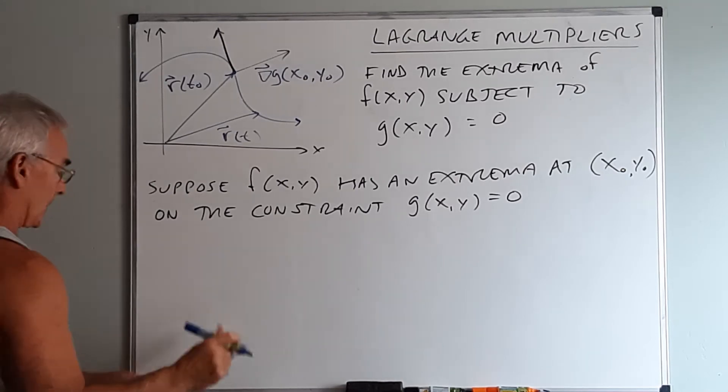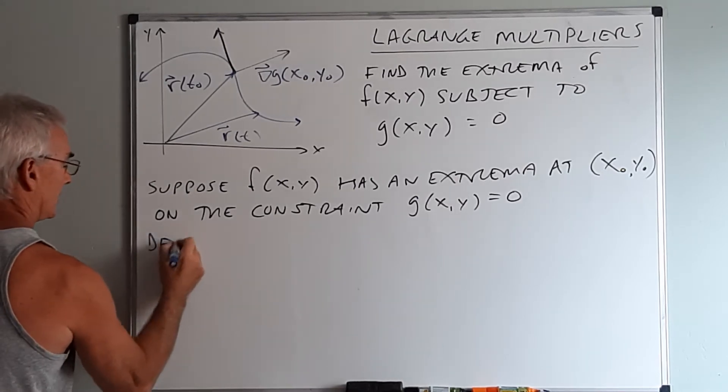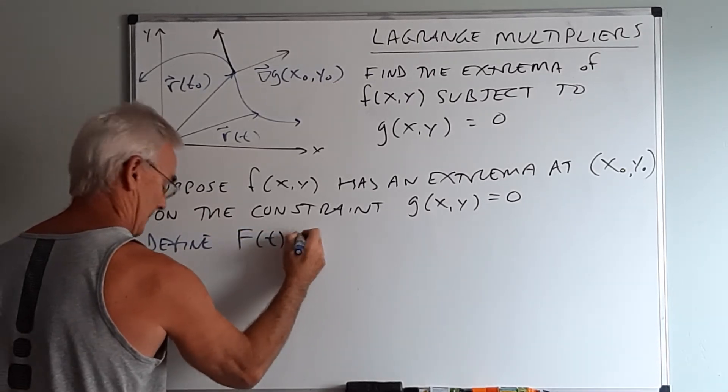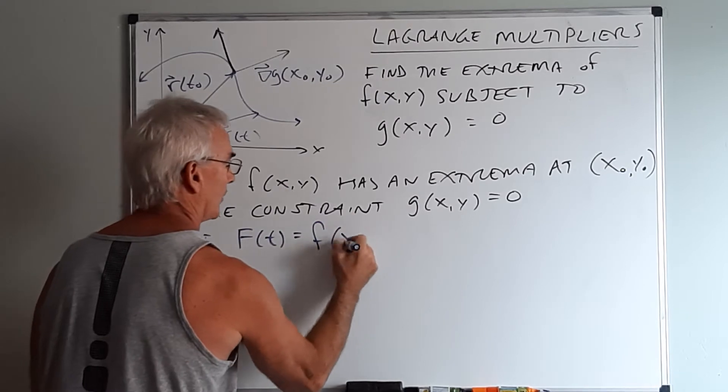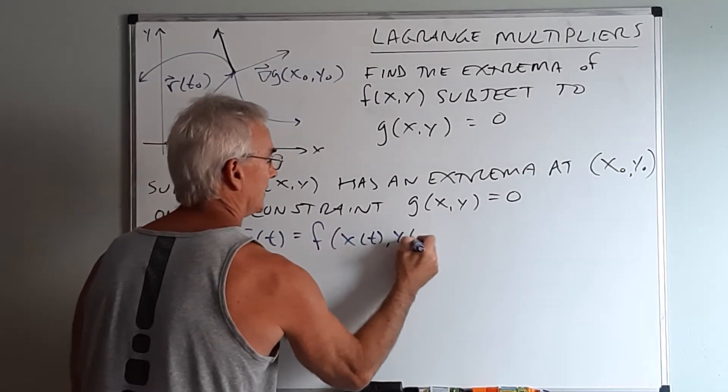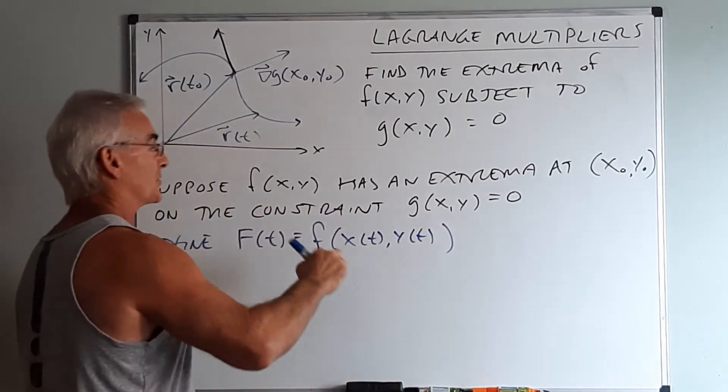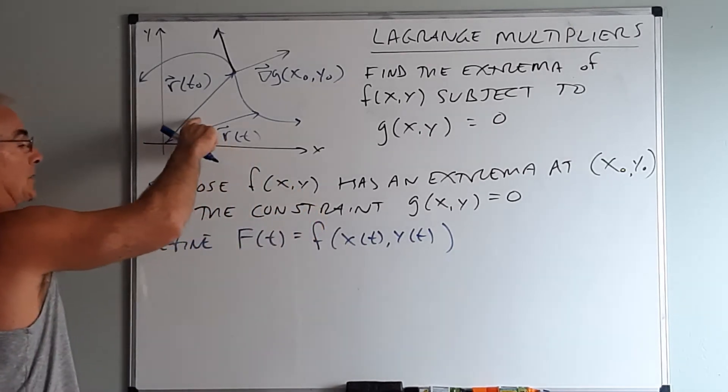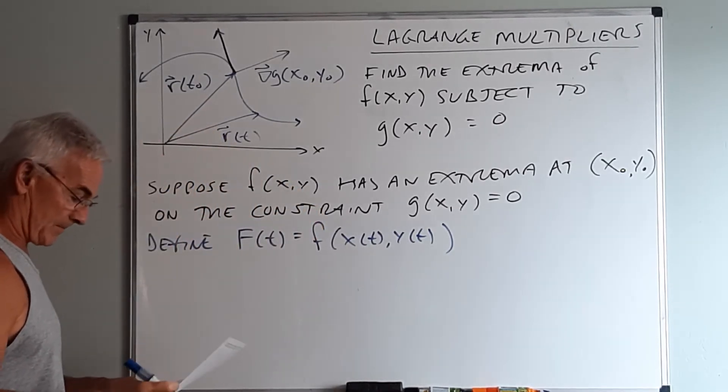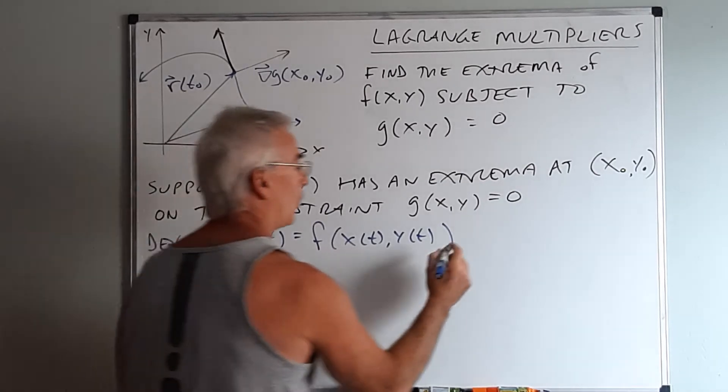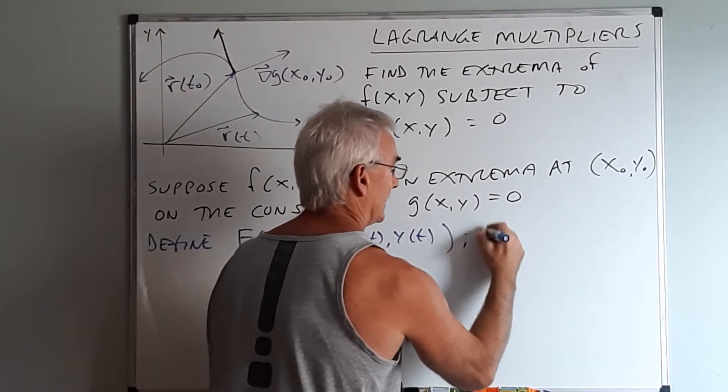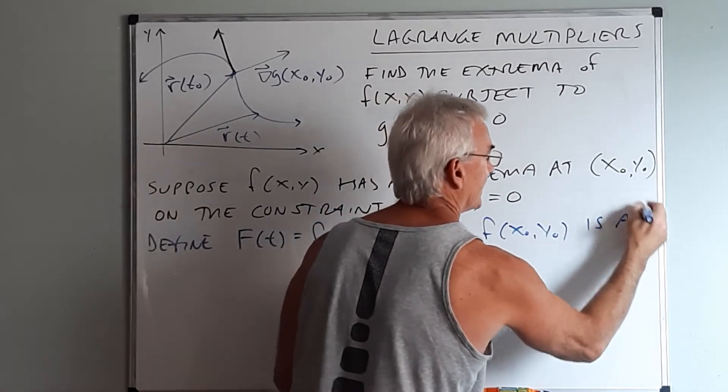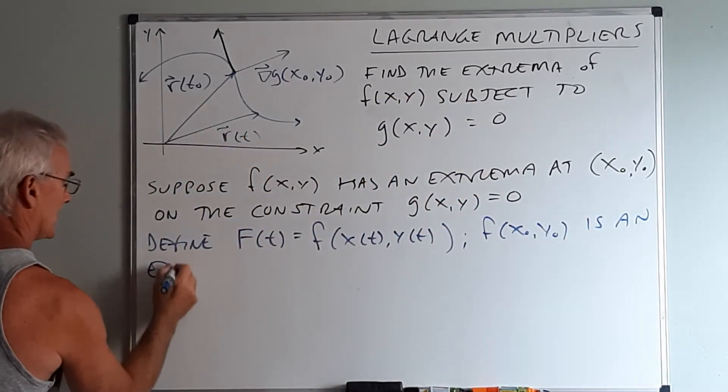So let's start by we want to define a new function. Let's call it capital F of t and we'll call capital F of t, f of x of t, y of t. So I'm going to take x and y and replace them with x of t and y of t like we did with the position vector. Now at this point here we know that if f of x zero y zero is an extrema, a maximum or a minimum,